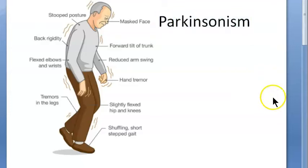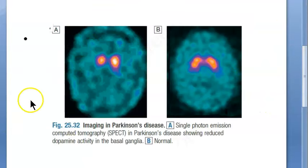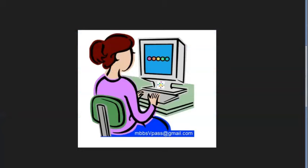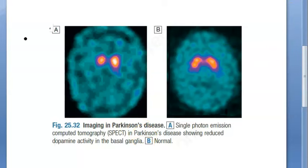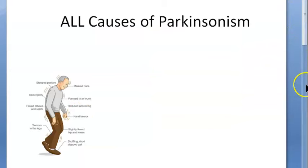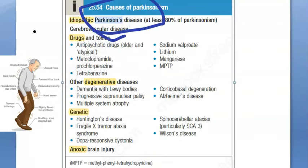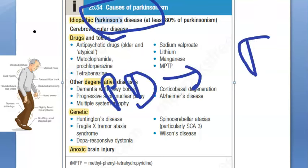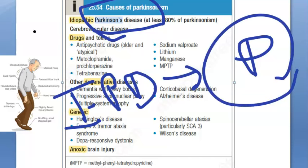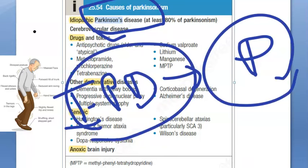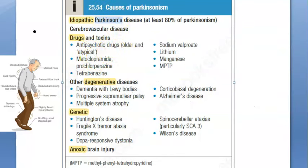We are here to learn all the causes of parkinsonism. There is something called Parkinson's disease itself — PD — which causes parkinsonism. And in Davidson's textbook it is referred to as idiopathic Parkinson's disease, meaning they don't know why it happens. 80% of parkinsonism is due to this idiopathic type.